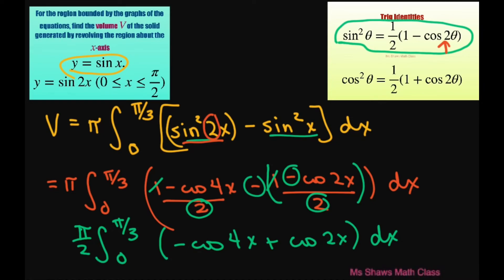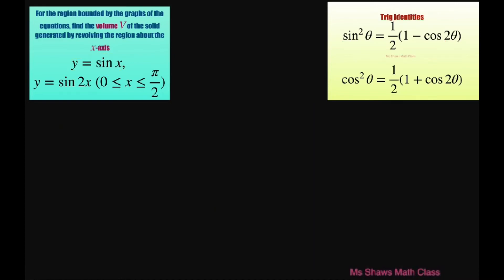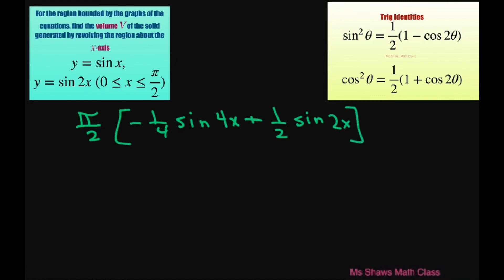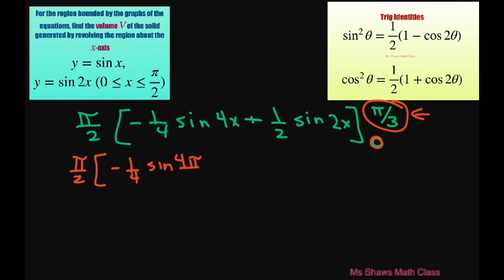Now we can integrate this. This gives us pi divided by 2 times negative 1 fourth sine of 4x plus 1 half sine of 2x, evaluated from 0 to pi divided by 3. Notice that substituting 0 gives 0 for both terms, so we only have to deal with the upper limit. Substituting pi divided by 3: negative 1 fourth times sine of 4 pi divided by 3, plus 1 half times sine of 2 pi divided by 3.